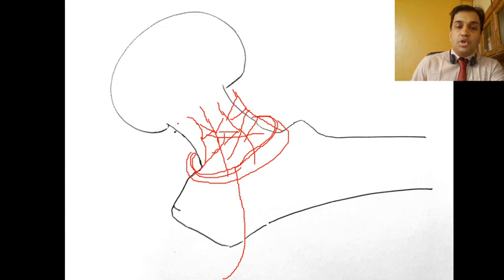Reaching towards the base of the head of the femur, these arteries come together and form another ring — the intracapsular subsynovial arterial ring of Croc.